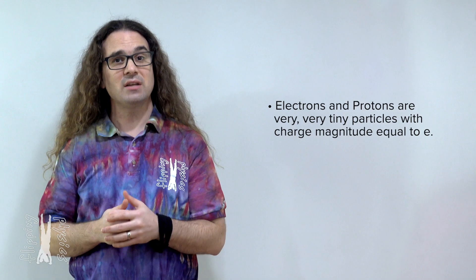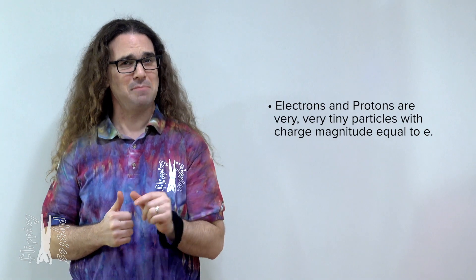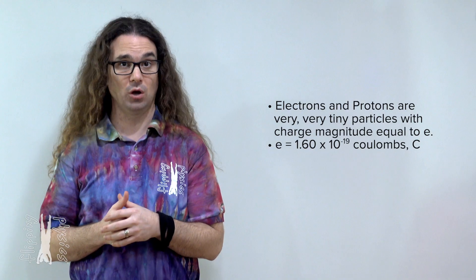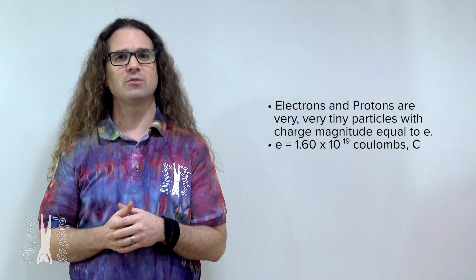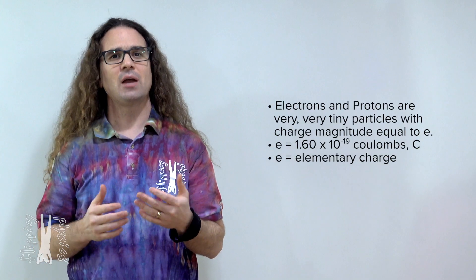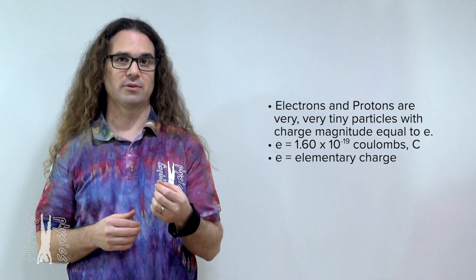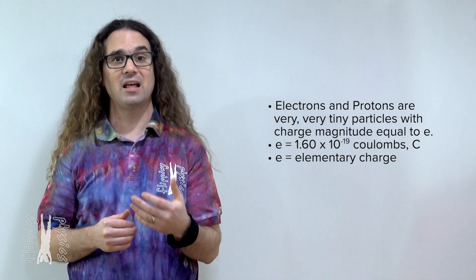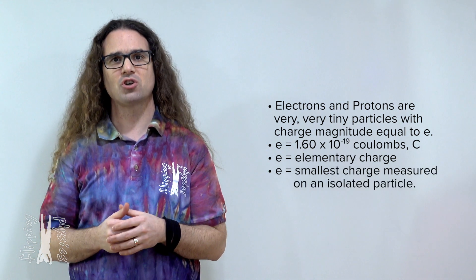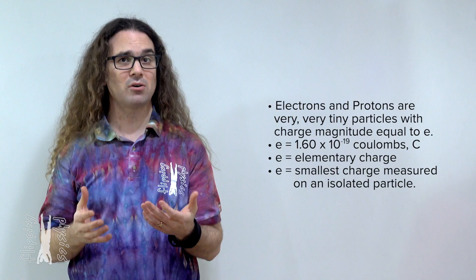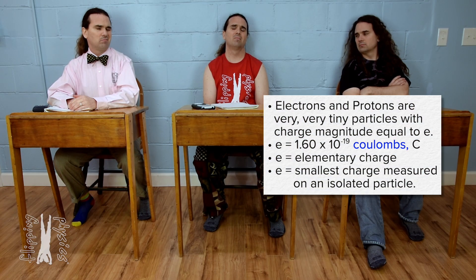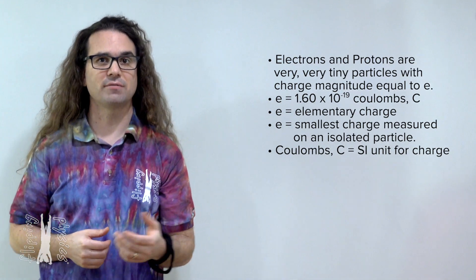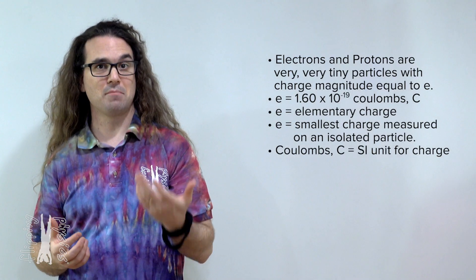Electrons and protons are both very, very tiny particles which carry an electric charge with a magnitude of roughly 1.60 times 10 to the negative 19 coulombs. 1.60 times 10 to the negative 19 coulombs is called the elementary charge and we use the symbol lowercase e to identify it. The reason it is called the elementary charge is because it is the smallest charge which has been measured on an isolated particle. The coulomb, capital C, is the SI unit for charge, just like the meter is an SI unit for distance and gram is an SI unit for mass.